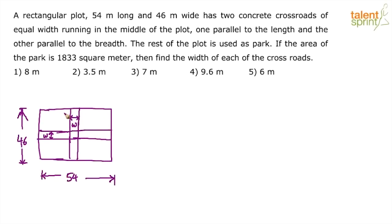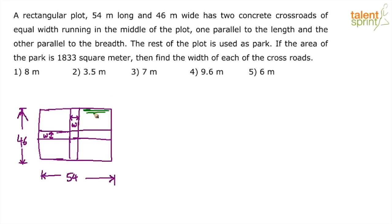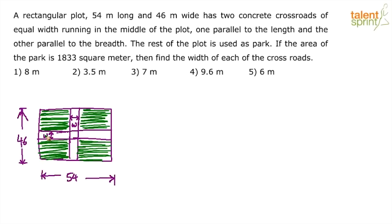The rest of the area is used as a park. I'm using green color to show the park — you don't have to do this in the exam, but I have the luxury of different colors. The green shaded region is the park, and its area is 1833 square meters. We need to find the width of each crossroad in terms of 54, 46, and w.